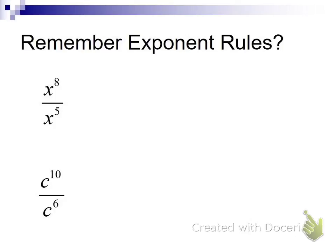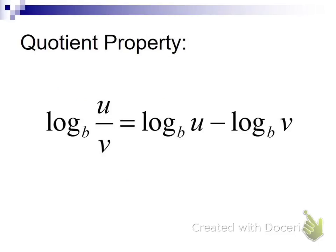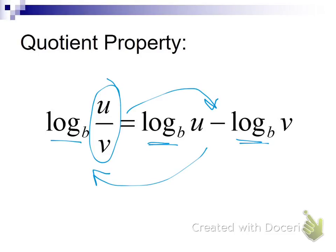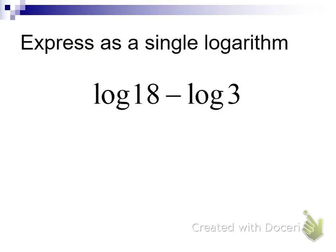Now, division. Remember that with division, we always subtracted the exponents — 8 minus 5 here to get x to the third; 10 minus 6 gives c to the fourth. With exponents, division and subtraction get linked together. So if I have a log where I'm dividing two things in the argument, I can split those up into their own logarithms: the logarithm of the numerator minus the logarithm of the denominator — and vice versa.